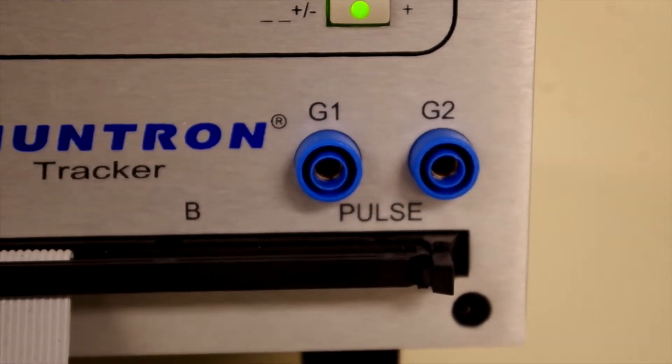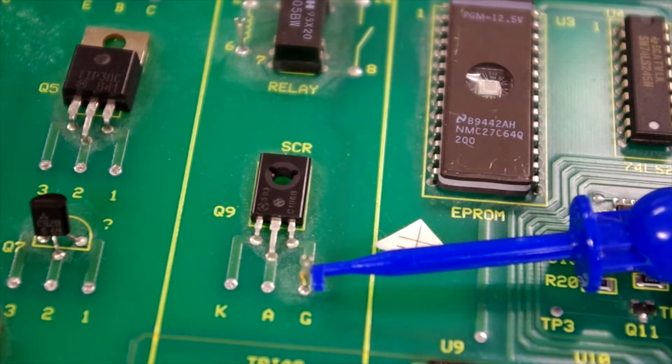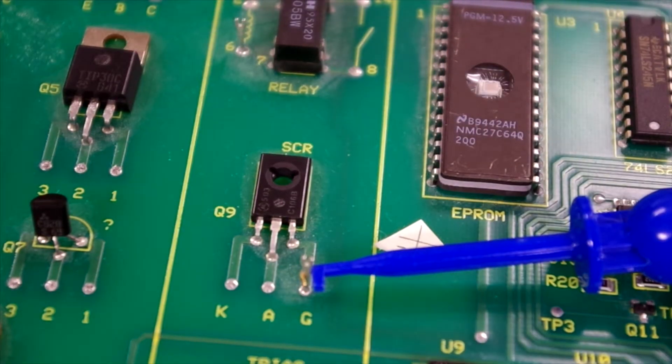The tracker 3200S has a built-in pulse generator that can be used to bias gated devices such as SCRs, triacs, and relays.